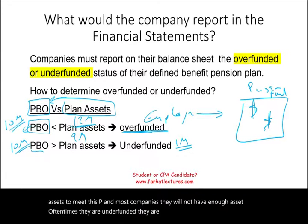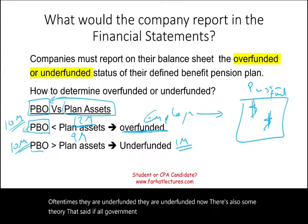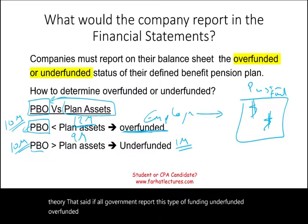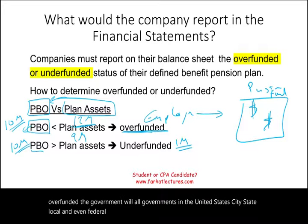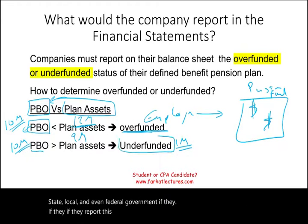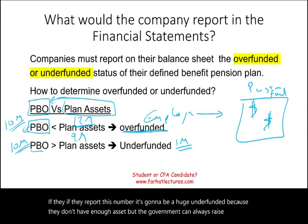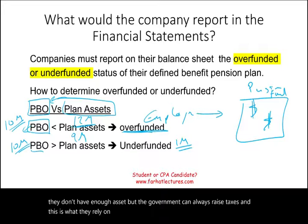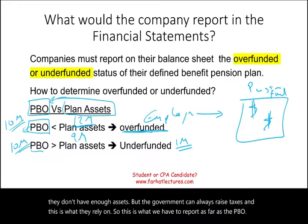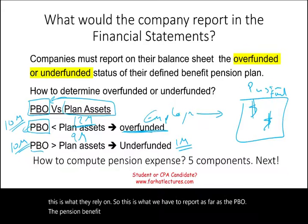There's also the argument that if all governments in the United States — cities, state, local, and even federal — reported this overfunded or underfunded number, it would show a huge underfunded position because they don't have enough assets. But the government can always raise taxes, which is what they rely on. This is what we have to report as far as the pension benefit obligation. The next important thing we're going to work on is the pension expense — how to compute it.